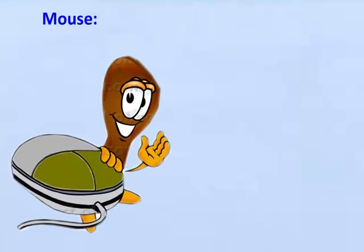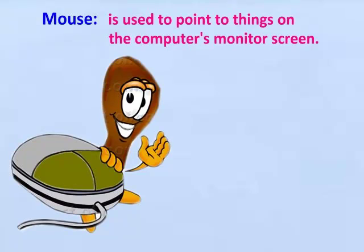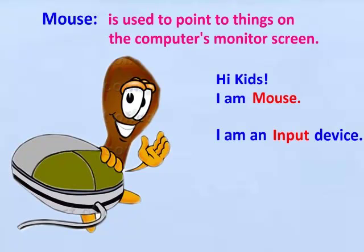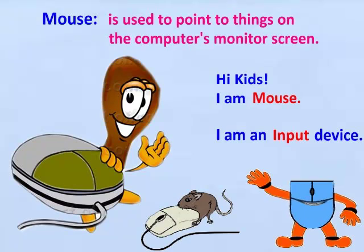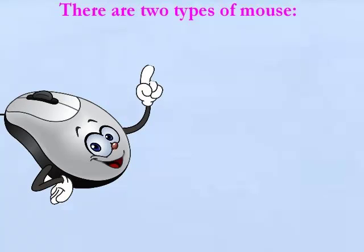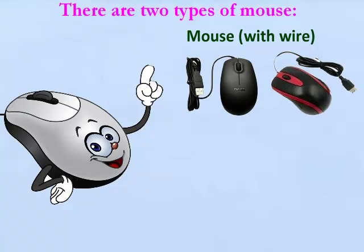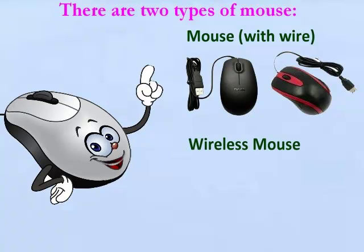Mouse: A mouse is used to point to things on the computer's monitor screen. It is an input device used to input commands to the computer system. It gets its name from its shape — it looks like a mouse or rat. There are two types: a mouse with wire, which uses a cable to connect to the computer system, and a wireless mouse, which uses wireless technology to connect to the computer system.